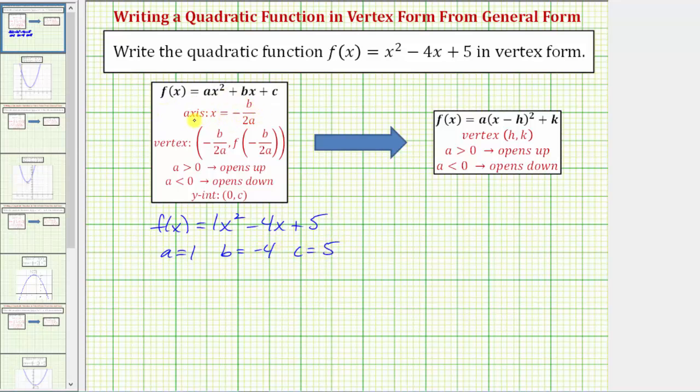So now let's find the equation of the axis of symmetry, which will also give us the x-coordinate of the vertex. We would have x equals negative b divided by two a, which is negative negative four all divided by two times one, which is positive four divided by two, which equals two.